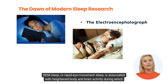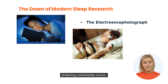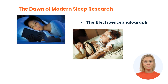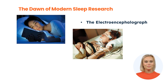REM sleep, or rapid eye movement sleep, is associated with heightened body and brain activity during which dreaming consistently occurs. In contrast, during NREM sleep, or non-rapid eye movement sleep, the body's physiological functions and brain activity slow down.